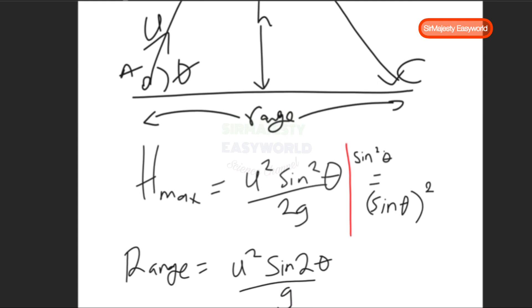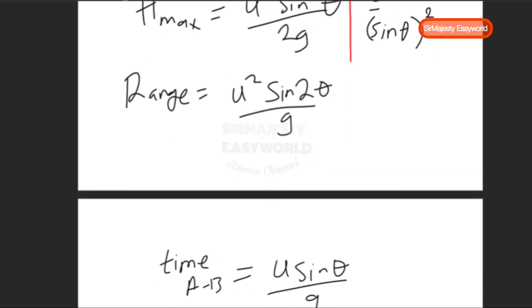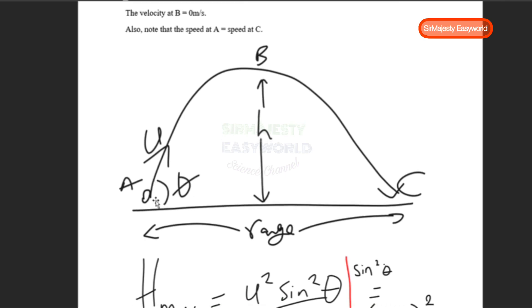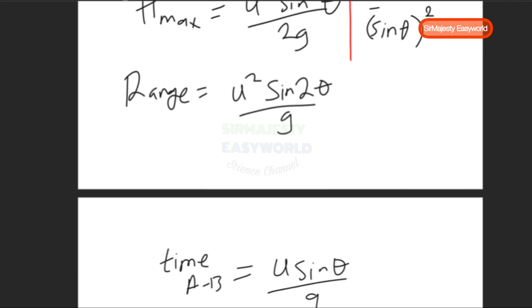The range formula is R = U²sin2θ / g. In this case only the angle is multiplied by two, not the entire sine function. To find the time to travel from point A to point B — from start to maximum height — the formula simplifies to: time = U sinθ / g.